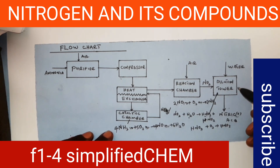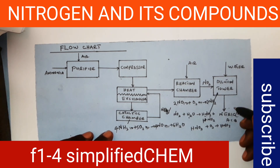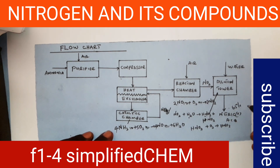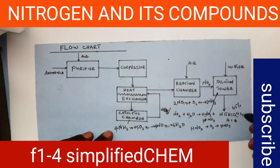The nitric acid obtained from the dilution tower is about 65% pure, meaning it contains 35% water. To increase the concentration of the acid, it is done by careful distillation using concentrated sulfuric acid.